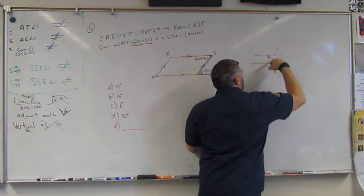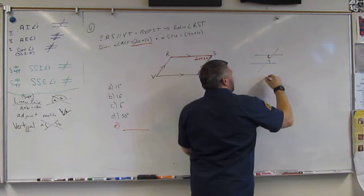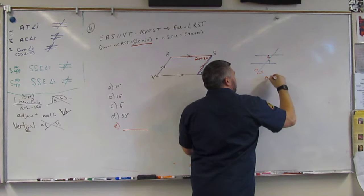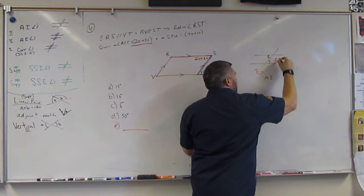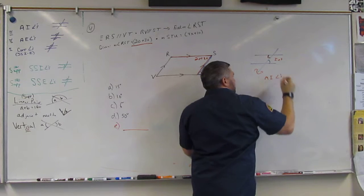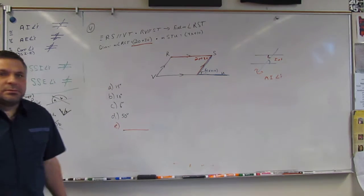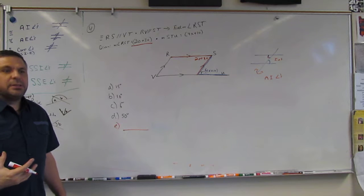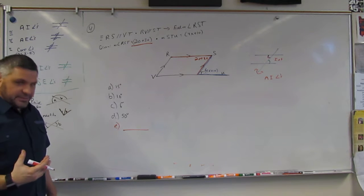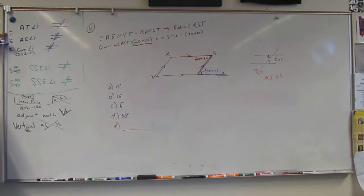So the red and the blue are what we call alternating interior angles. Are those congruent? Yes. So we need to know that right here. Our three congruencies are alternate interior, alternate exterior, and corresponding.